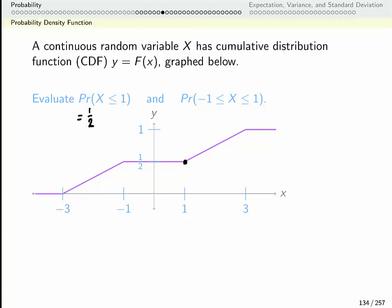So now I don't want every single way that my variable could be less than 1. That was F of 1. Now I want every way that it's less than 1 but also bigger than negative 1. So I need to get rid of some of these possibilities. In particular I need to get rid of all of these possibilities which are captured in F of negative 1.